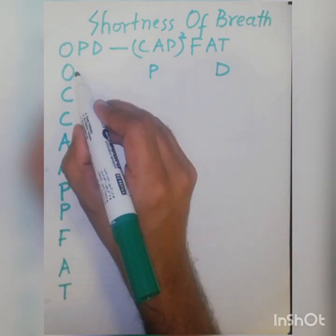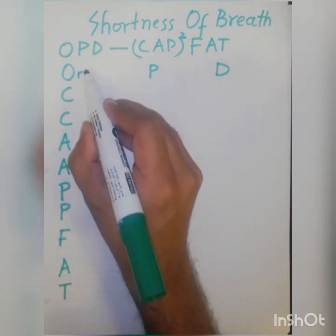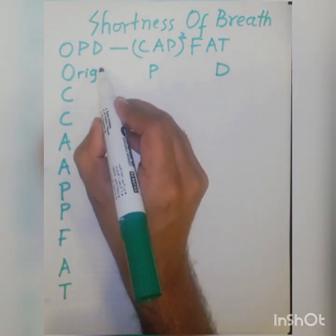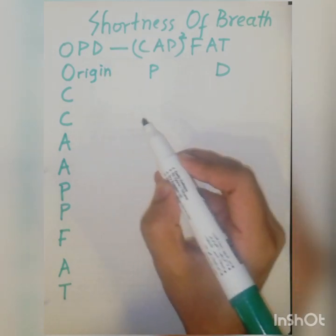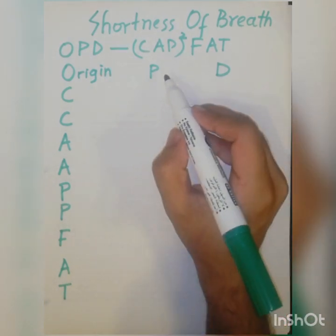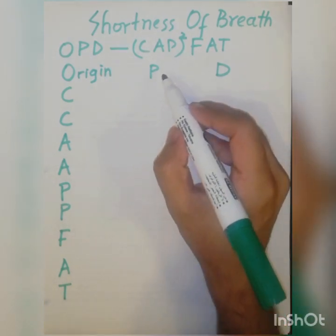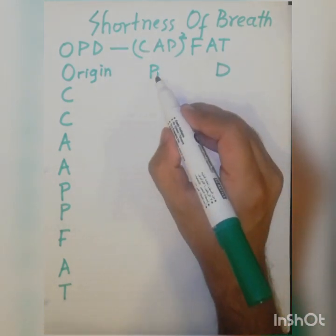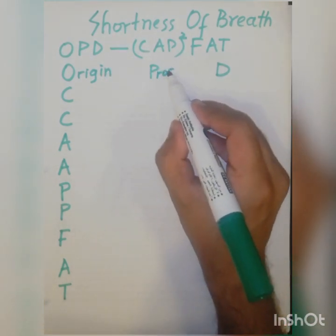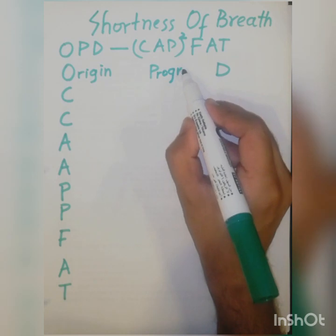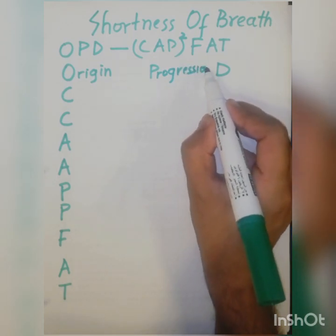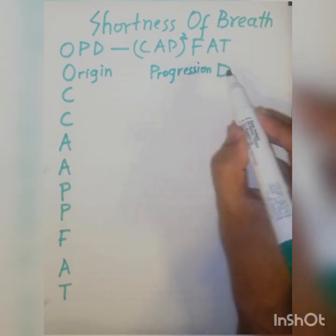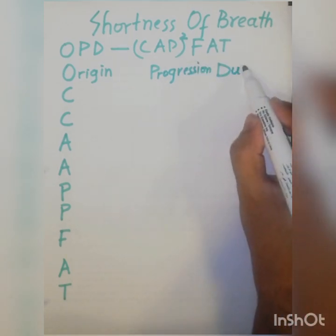O stands for origin — whether it's sudden or gradual. P stands for progression of shortness of breath, and D stands for duration.